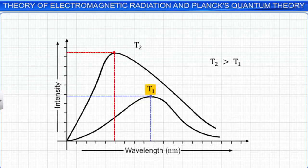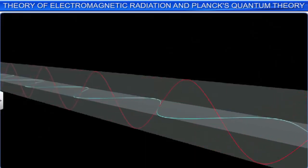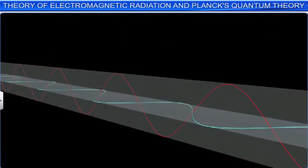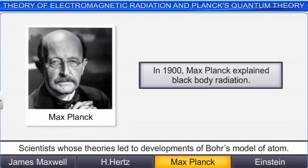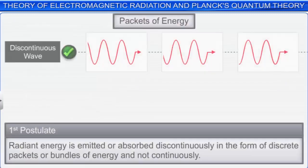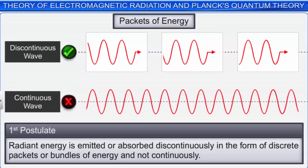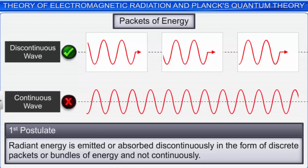At a given temperature, there is a wavelength at which maximum intensity of radiation is emitted. The position of this maximum intensity shifts towards higher wavelengths with decrease in temperature. These observations could not be explained by the electromagnetic wave theory of light. To account for these experimental observations, Max Planck in 1900 proposed that radiant energy is emitted or absorbed discontinuously in the form of discrete packets or bundles of energy — and not continuously. This is the first postulate of Planck's theory.